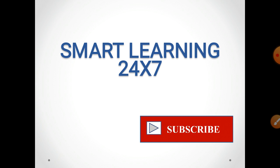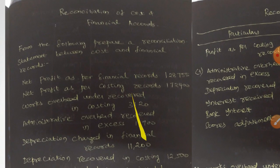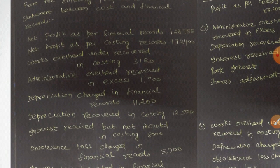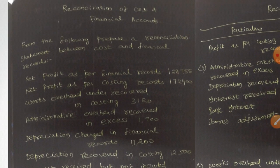Moving on to our very first question in this topic. The question is: from the following, prepare a reconciliation statement between cost and financial records. Net profit as per financial records is 1,28,755. As usual, we have been given this information.